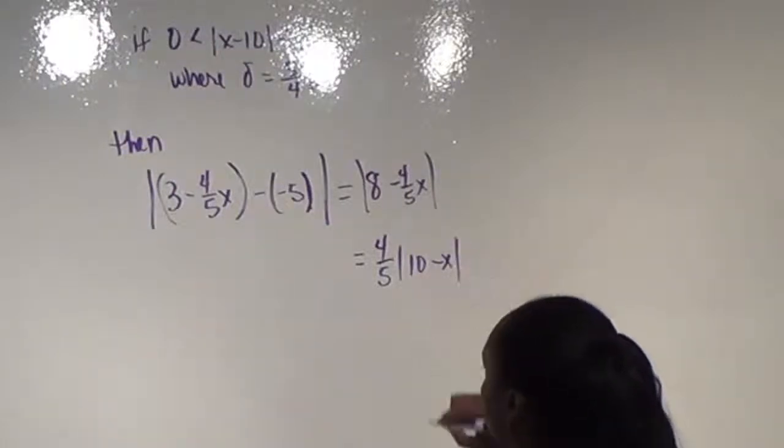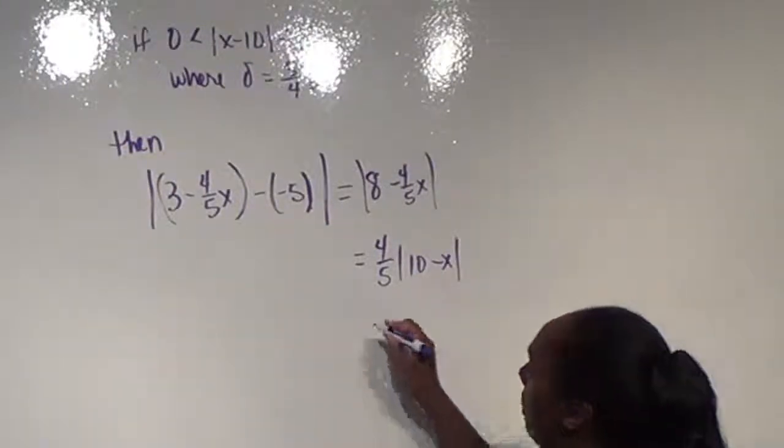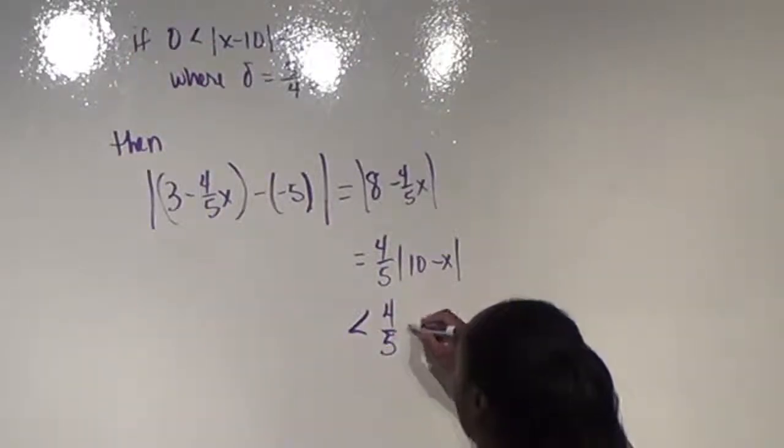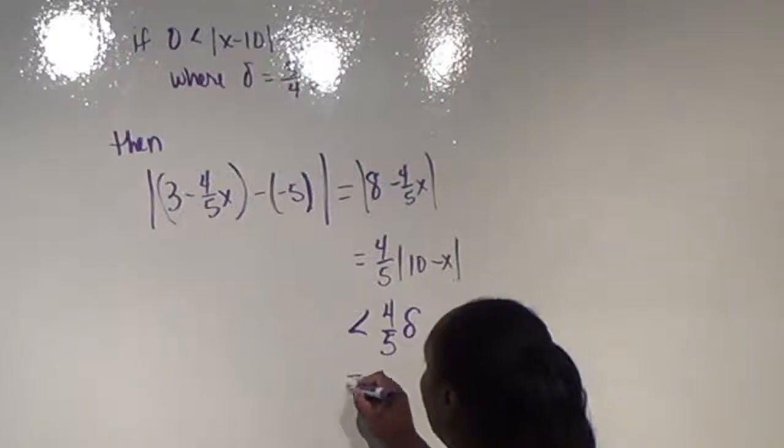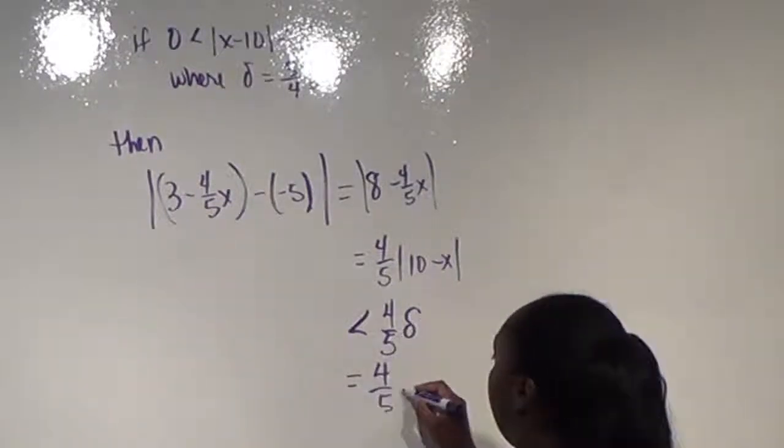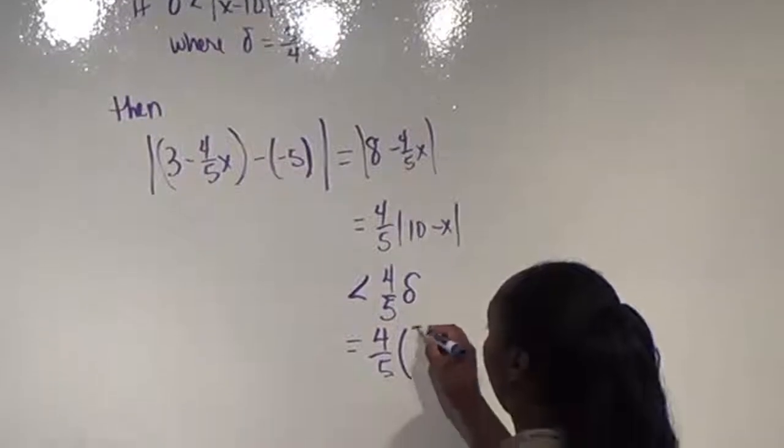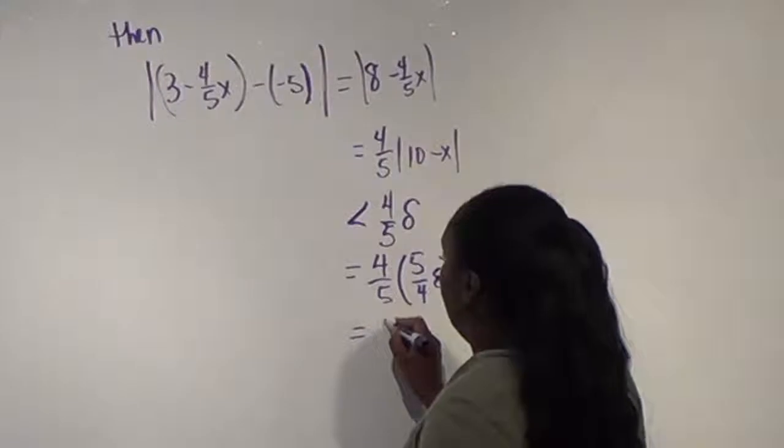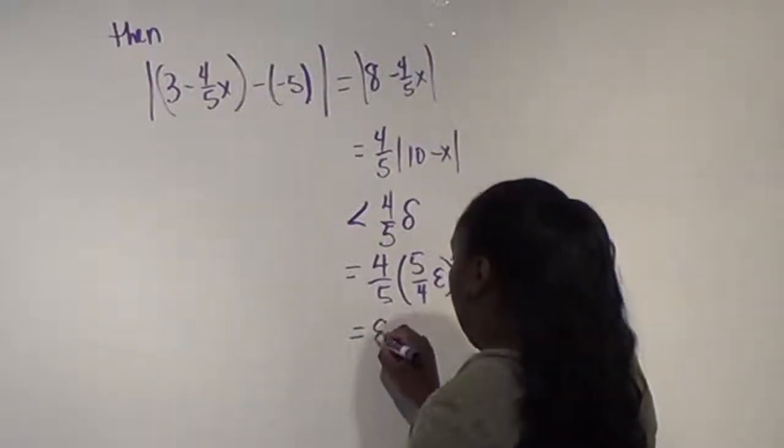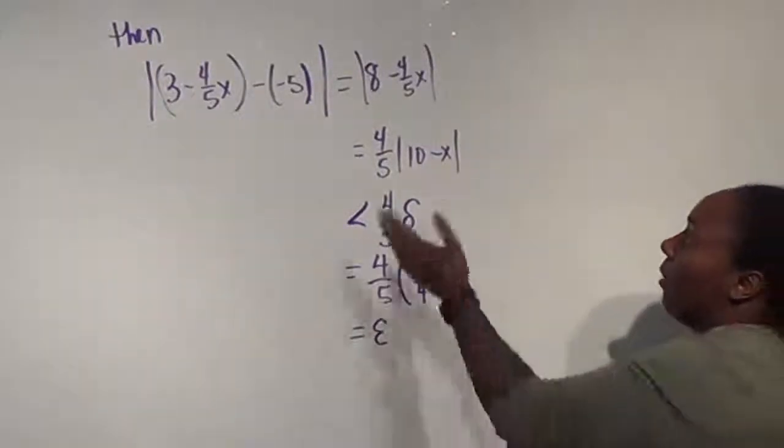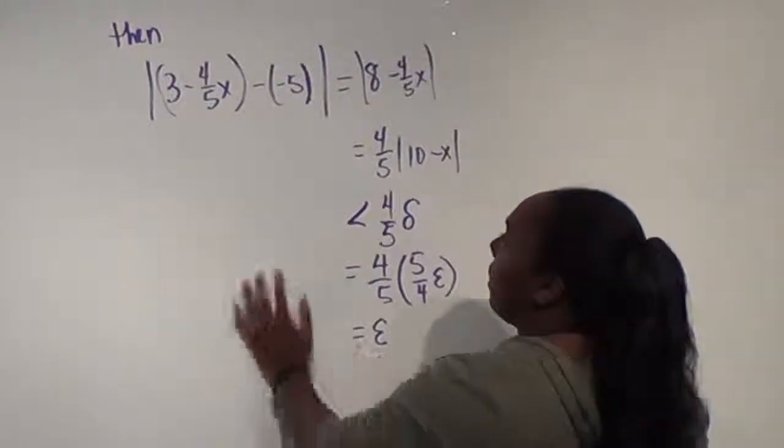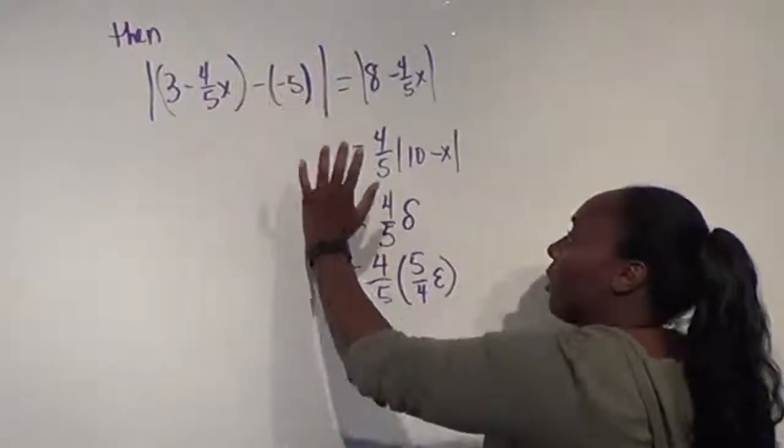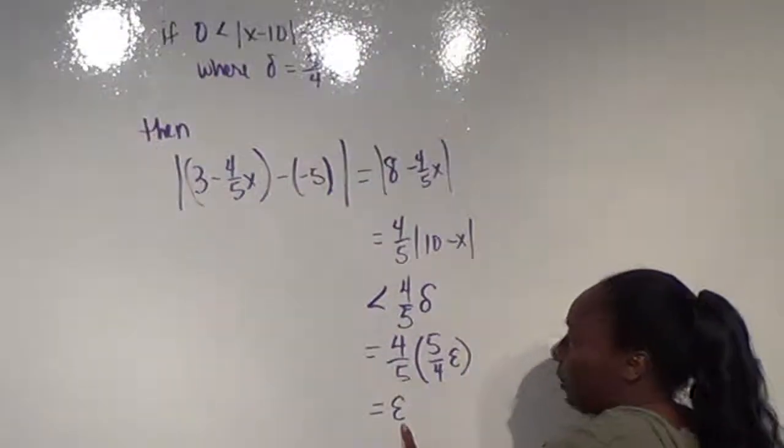which again we know is less than delta. Delta says that this is less than 4/5 times delta, which we've labeled from above to be 4/5 of 5/4 of epsilon. And if we simplify, following our expressions here, it says that this difference between our function and our limit is going to be less than epsilon, which is what we wanted.